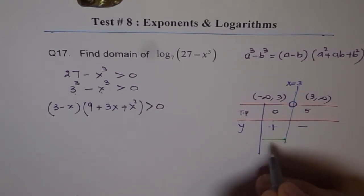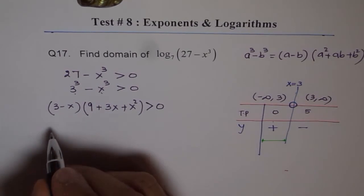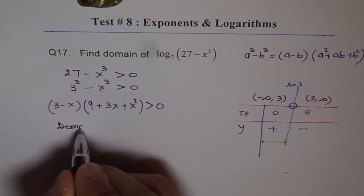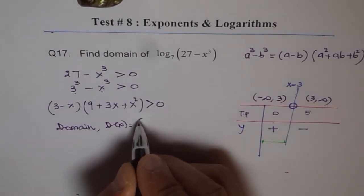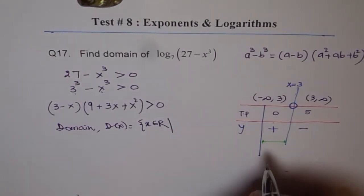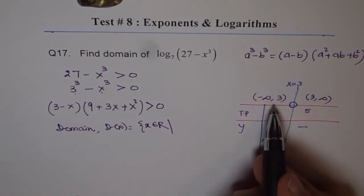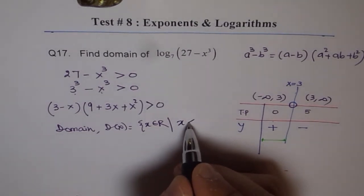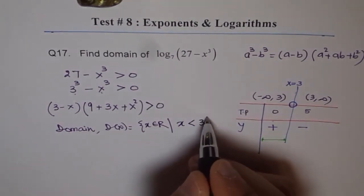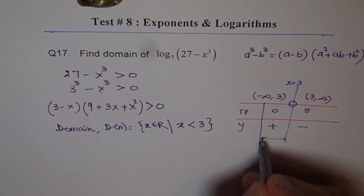Between this. That is our answer, not including these points. Therefore, we can write our domain as x belongs to real numbers so that x is less than 3. Do you see that? x is less than 3. It could be anything on this side. That is how we are going to write domain.